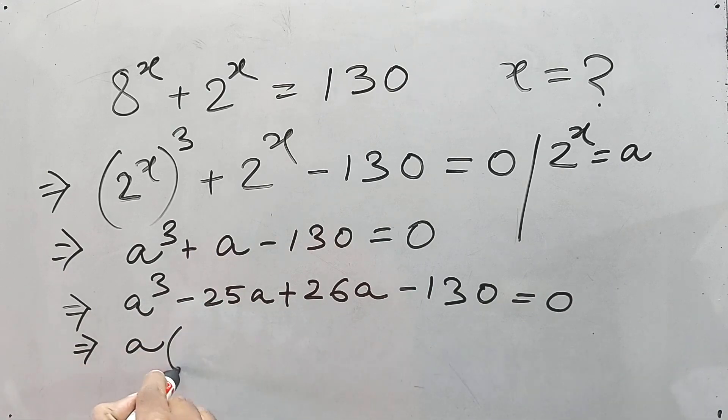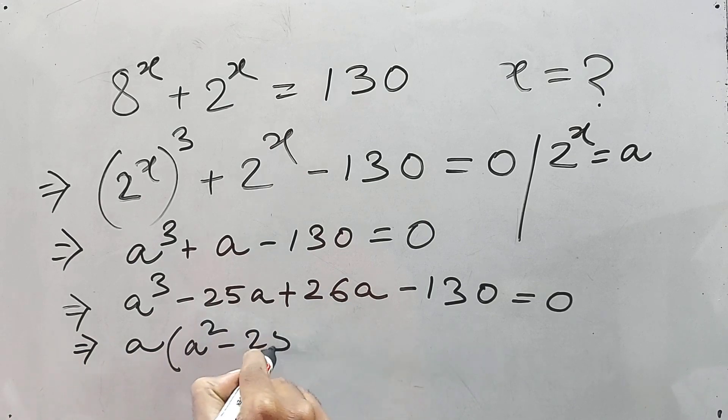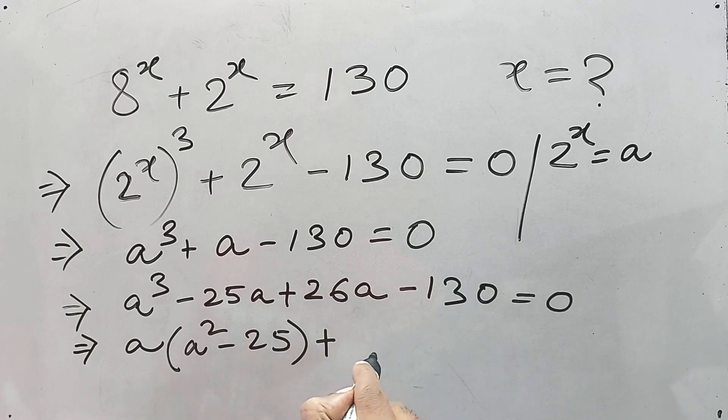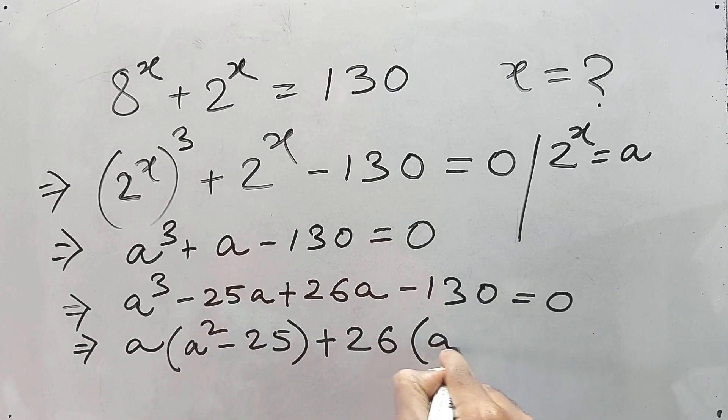So now if you take the common, it will be a square minus 25. And this side 26 will be common because it will be a minus 5.